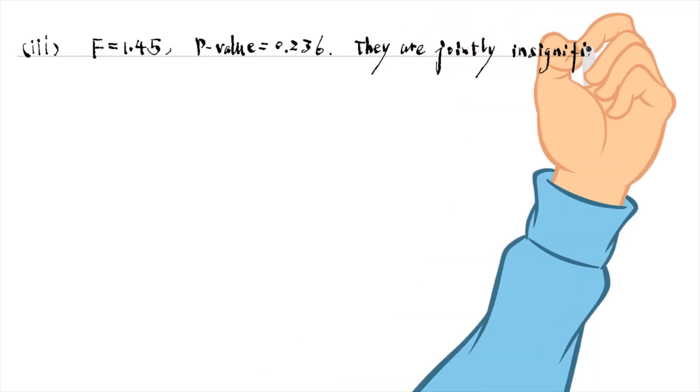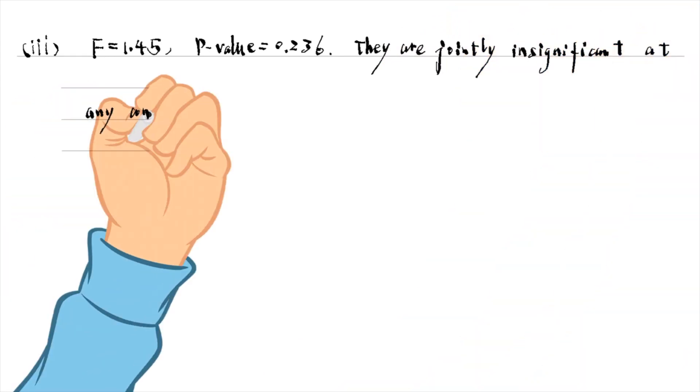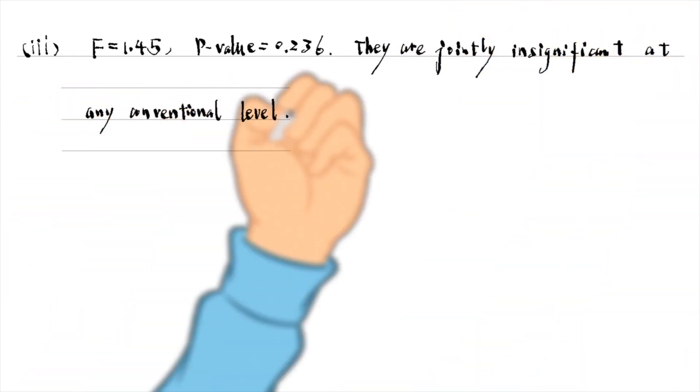In part 3, we test for the joint significance of the interactions involving the looks variables. The F-statistic is 1.45 and its p-value is 0.236.